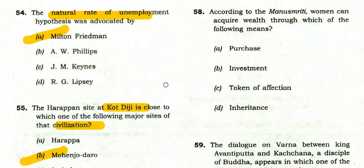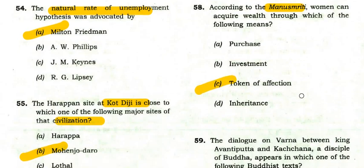According to Manusmriti, through which means can a woman acquire wealth? Women can acquire wealth only through a token of affection. They cannot acquire wealth through inheritance, purchase, or investment — they cannot purchase land.